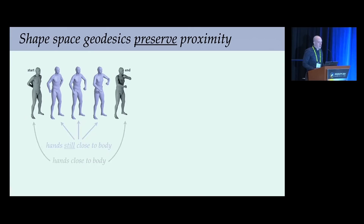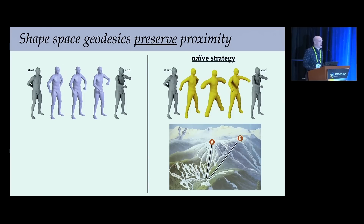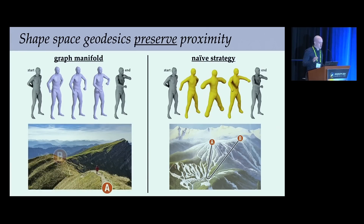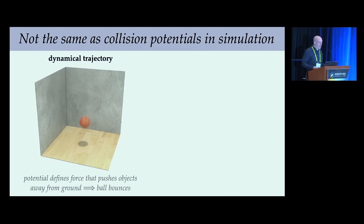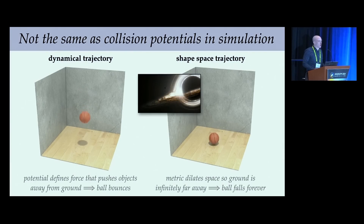To make an analogy, the naive scheme was like going from one mountain peak to another by going all the way back down to the parking lot and then hiking back uphill. The graph manifold says: just find a nice flat ridge trail to travel along. This is also not the same as how collision potentials are used in simulation, where the potential gradient turns into a force changing the direction of motion—like a basketball bouncing off the floor. Here, we literally stretch out space itself so it takes infinite time for the basketball to reach the floor, like a rocket ship approaching a black hole that never quite reaches the event horizon.